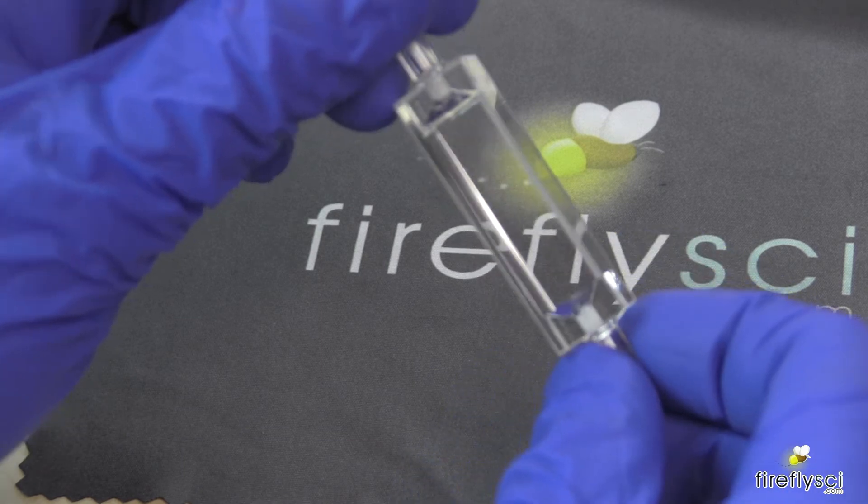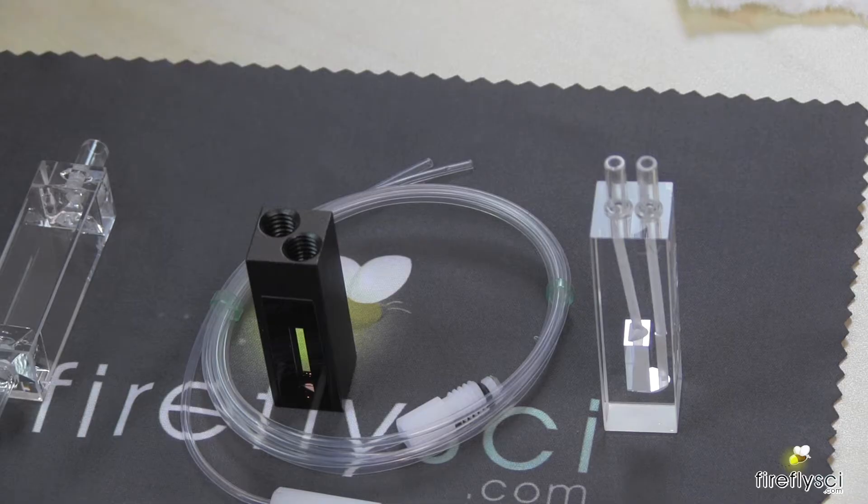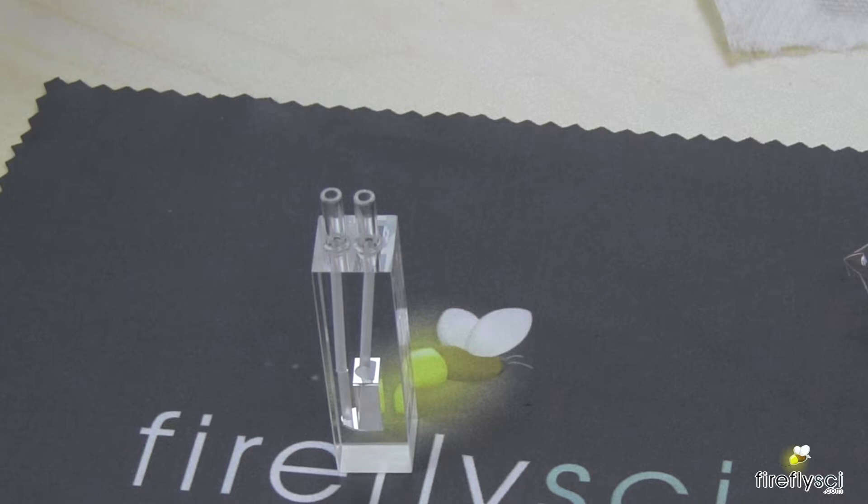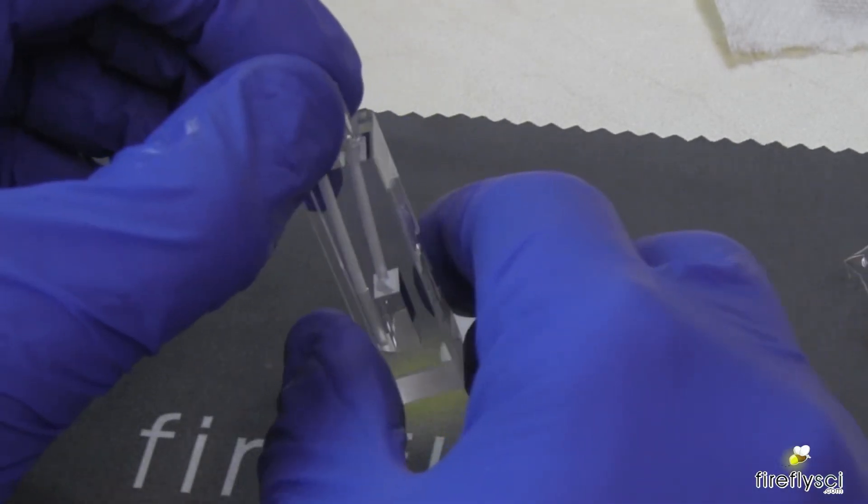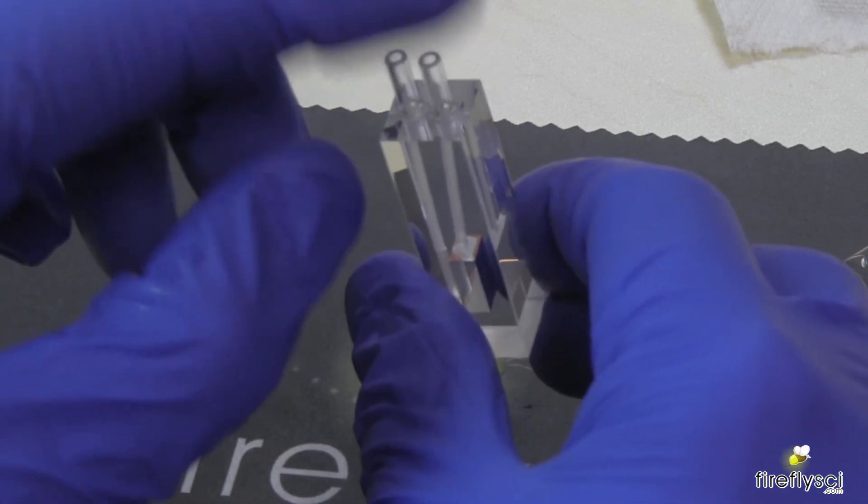This allows a steady flow of samples to be analyzed rather than removing the cuvette and having to refill it. The inlet and outlet tubes can be in different locations. Some cells have the inlet and outlet tube on the top of the cuvette, like we see right here.